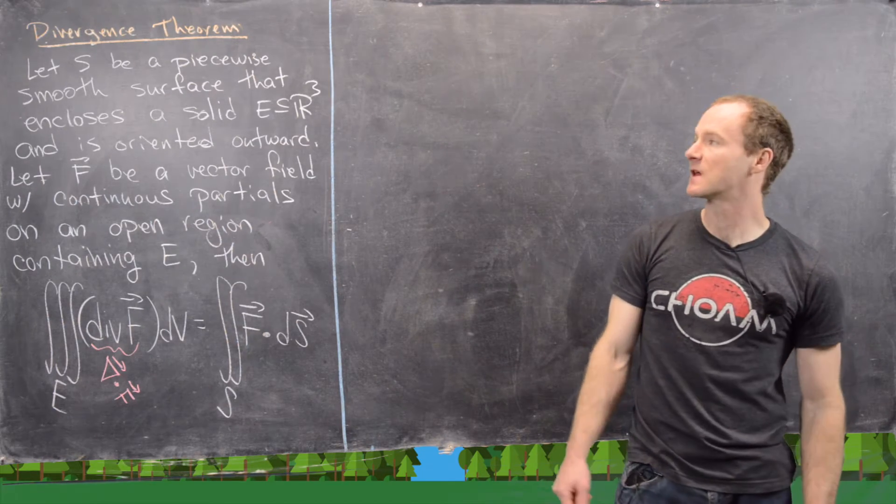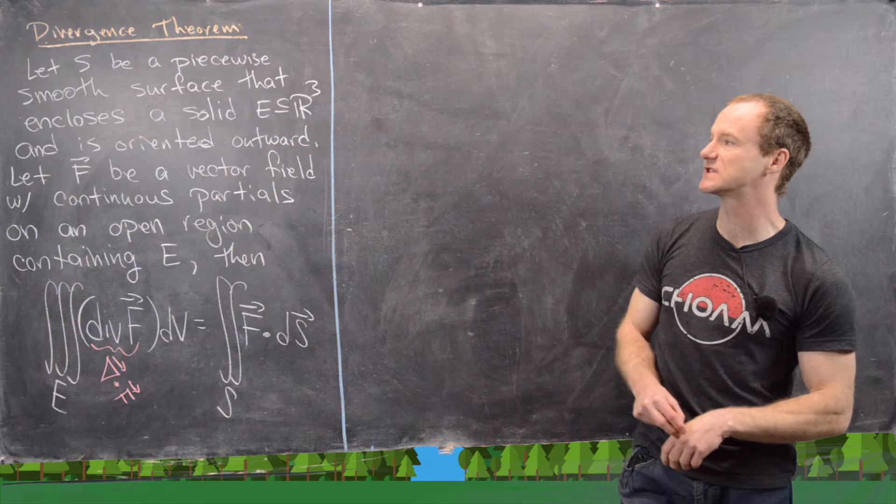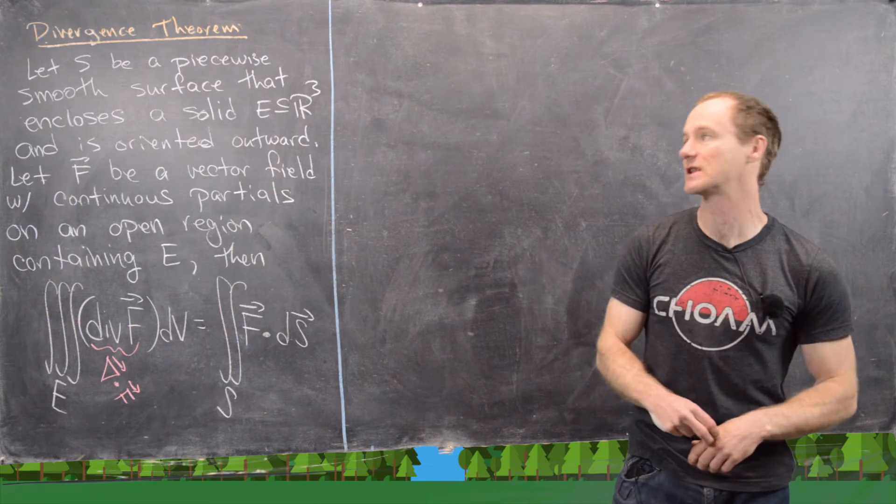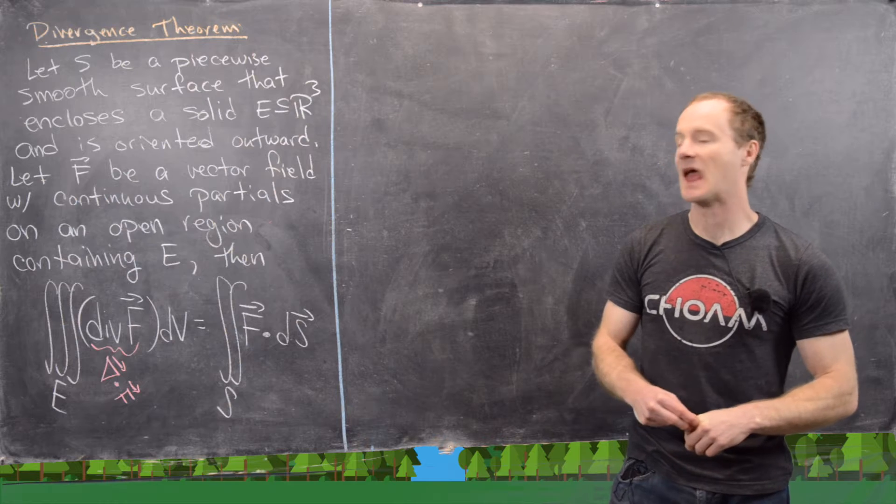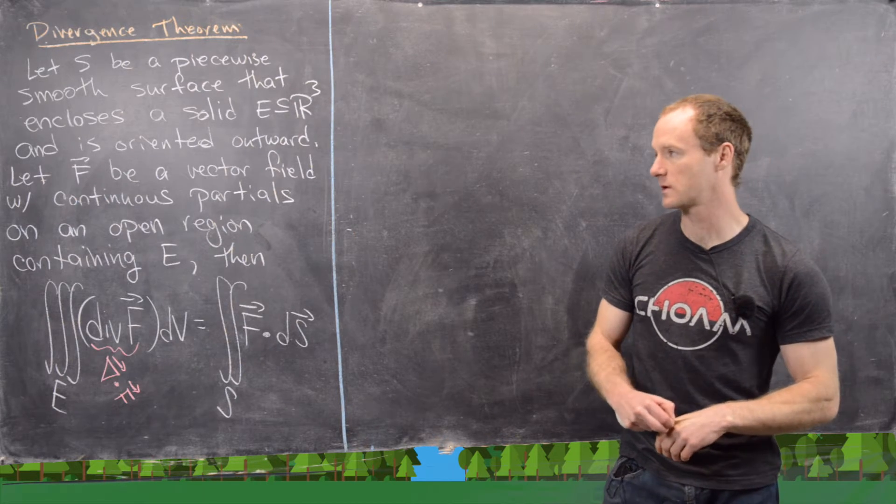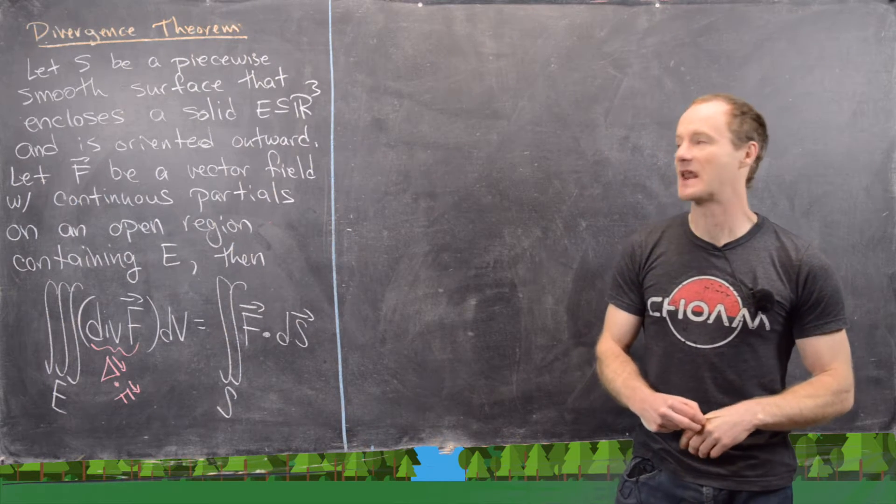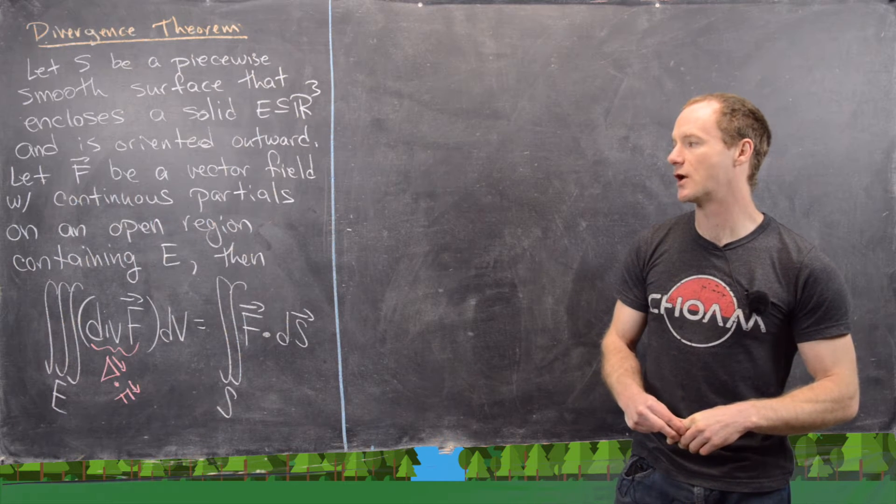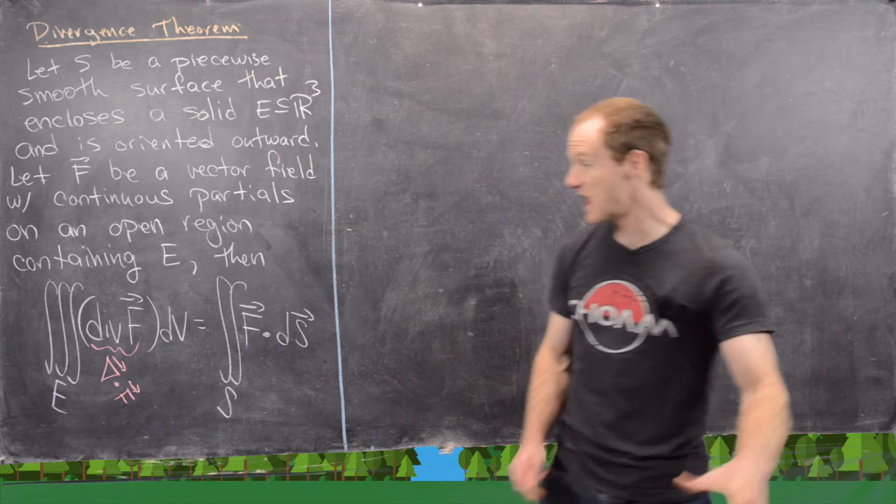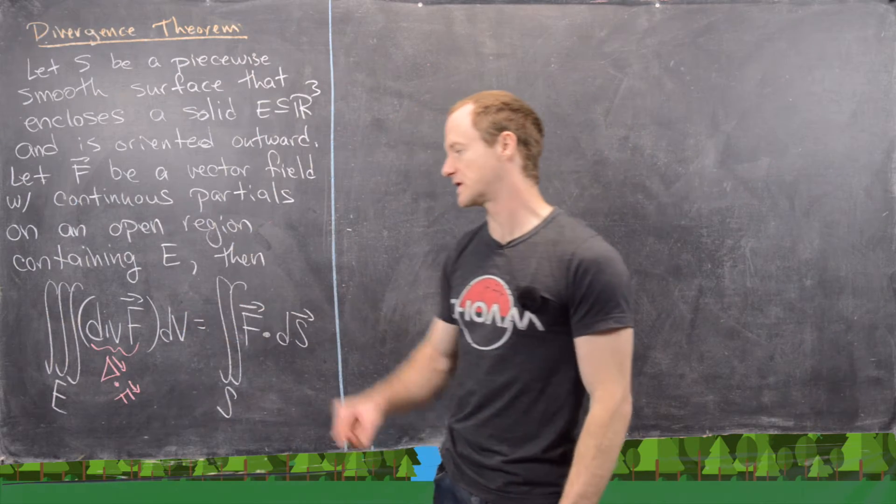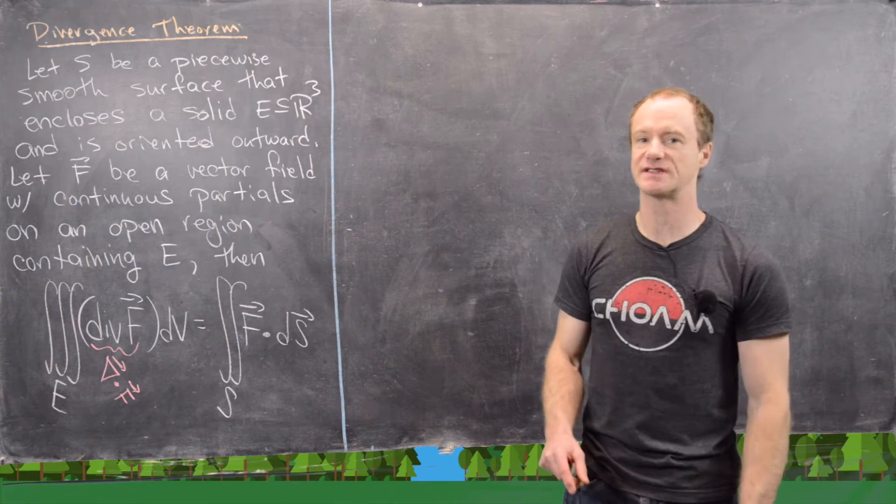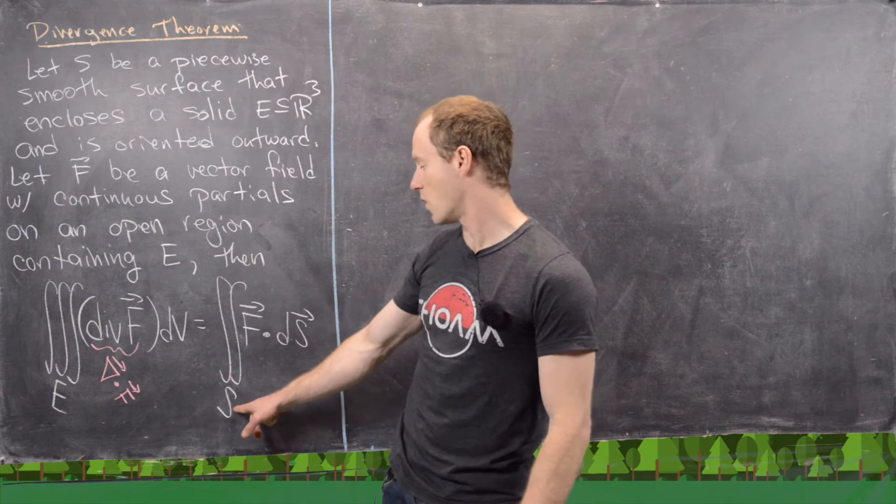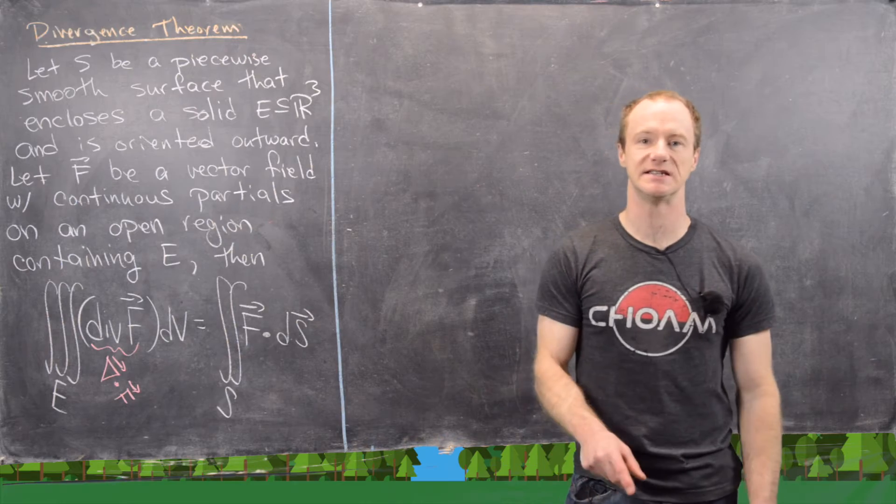Let's look at the statement here. Let S be a piecewise smooth surface that encloses a solid which we'll call E in R³, and it's oriented outward. Also, we want to let F be a vector field with continuous partials on an open region containing E. Then we have the triple integral of the divergence of F is equal to the surface integral over S of F dot dS.